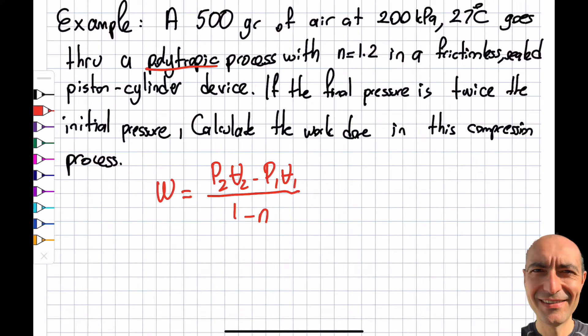Let's take a look what I know, what I don't know. State 1: P is given to me 200 kilopascals, T is given to me as 27 Celsius, and M is given to me as 0.5 kilograms.